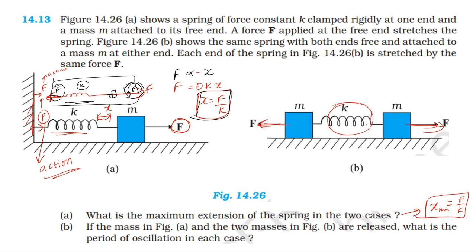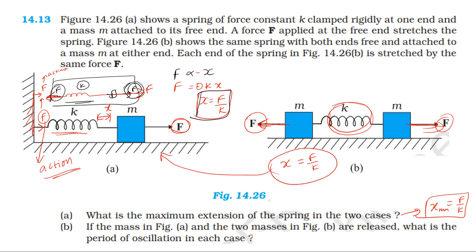In the second case, the same two forces F act on either end of the spring. So for both cases, the maximum extension of the spring is F by k. F by k is the correct answer.